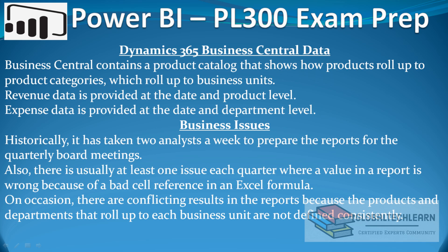Under business issues, historically it has taken two analysts a week to prepare the reports for the quarterly board meetings. Also, there is usually at least one issue each quarter where a value in a report is wrong because of a bad cell reference in an Excel formula. On occasion, there are conflicting results in the report because the products and departments that roll up to each business unit are not defined consistently.